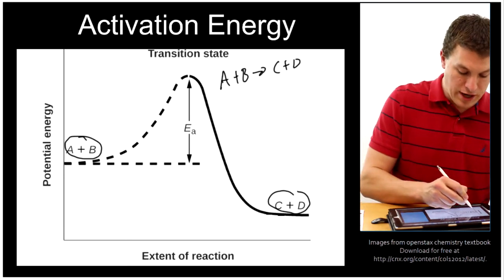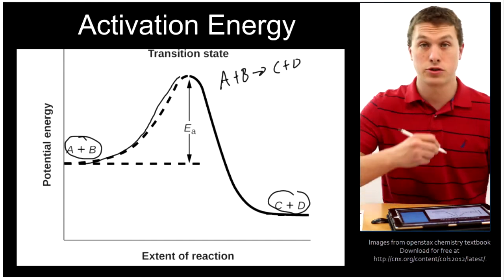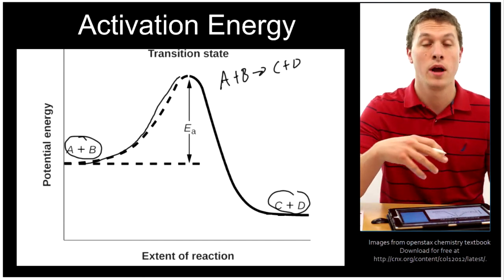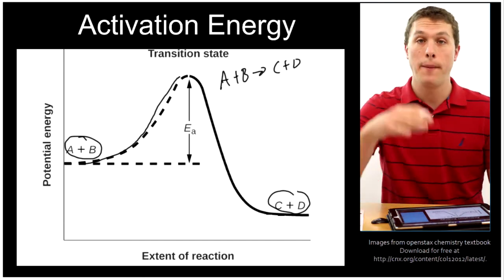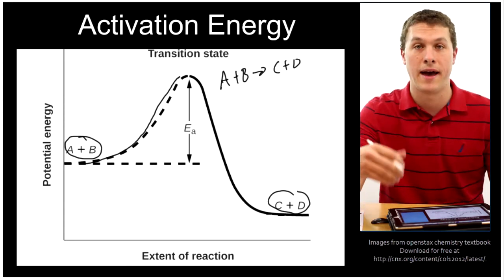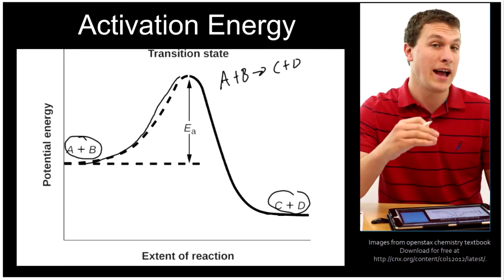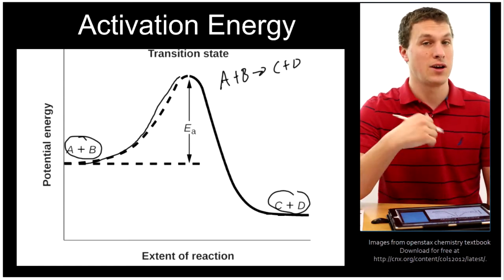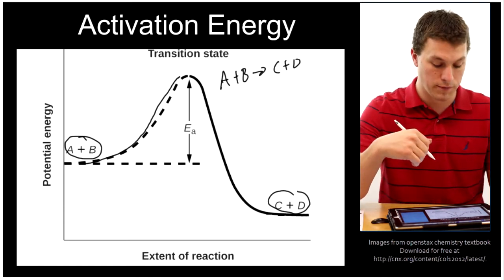But before it can drop down it's got to go up this hill. And that's true whether a reaction is exothermic or endothermic. It has to go up this hill before it can drop back down. And that hill and the height of that hill is called the activation energy. The higher that hill is, the harder it is to get that reaction to run forward.